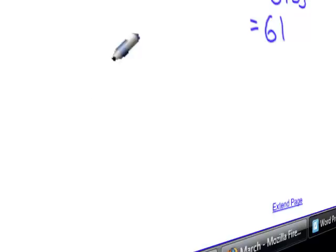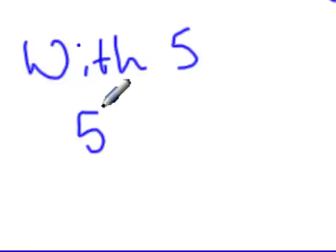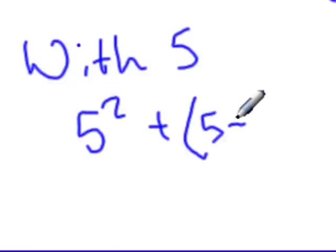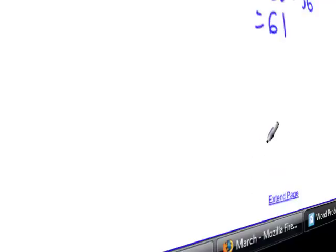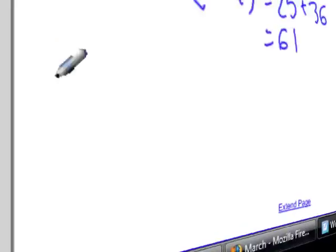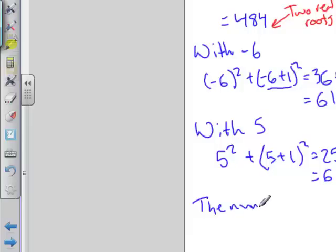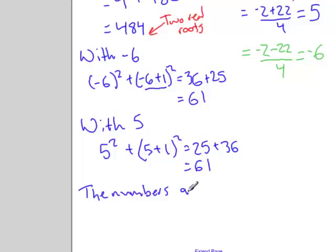Let's have a look at the other root as well. Using 5 as our number, we have 5 squared plus 5 plus 1 squared. This again will give me 25 plus the square of 6 is 36, equal to 61. So from here, I've got two different ways of saying this. I can say the numbers are 5 and 6, or negative 5 and negative 6. Either one would be an acceptable answer.